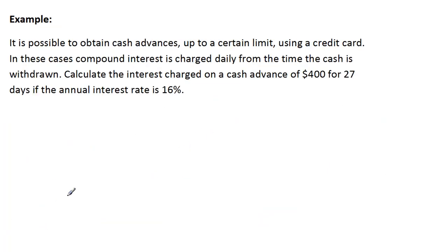All right, let's have a look at another situation here. It says it's possible to obtain a cash advance. Now a cash advance is just taking money out of your credit card as cash rather than just buying something. But of course it does cost quite a lot of money. And here it is, the interest is charged on a cash advance of $400, it only goes for 27 days. The interest rate is 16%. But the interesting thing is that the interest is charged daily. There's a daily compounding effect.